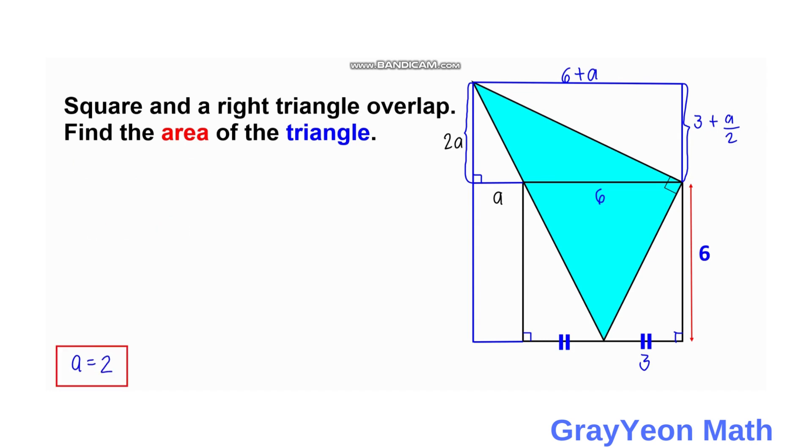Okay, so if A is equal to 2, then this becomes 4. This 2A is equal to 2A. 2 times 2 is equal to 4. Then 6 plus A becomes 8. 6 plus 2. Then this 3 plus A over 2 since A is 2 divided by 2. This becomes 1 plus 3. We have 4. And this A is equal to 2.